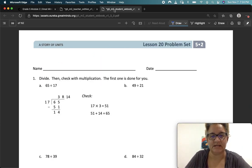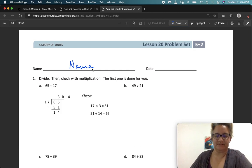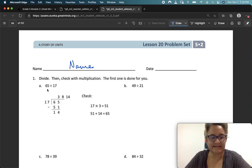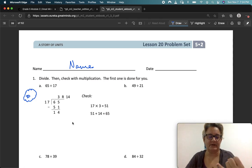So let's go to the problem set. Number one, divide, then check with multiplication. The first one is done for you. So we've got a number like 65, and we want to divide it by 17. Up until now, we've been dividing with really easy divisors, but 17 isn't that easy. So what are you going to do? In your mind, you're going to round that 17 up to 20.